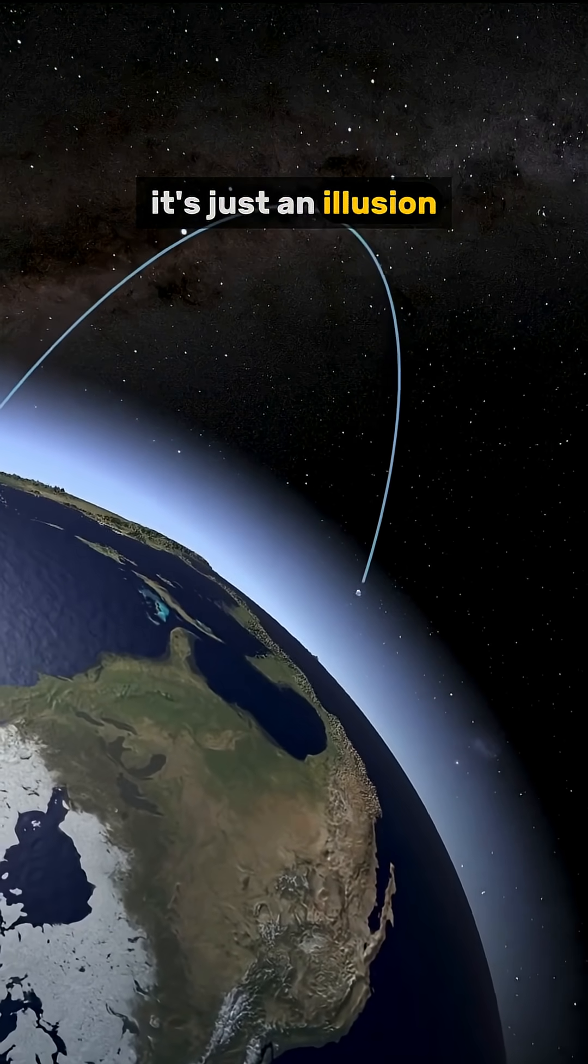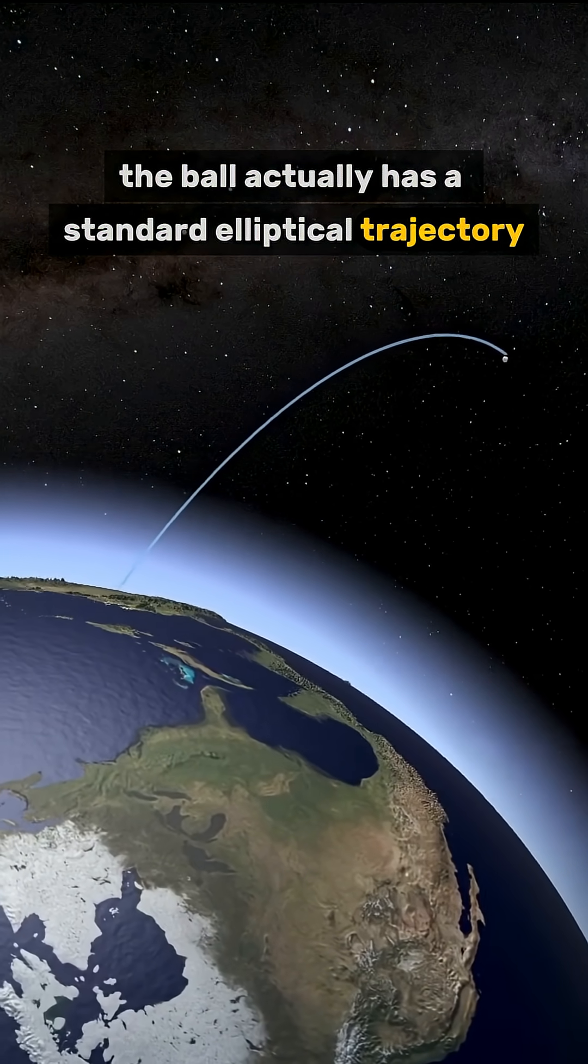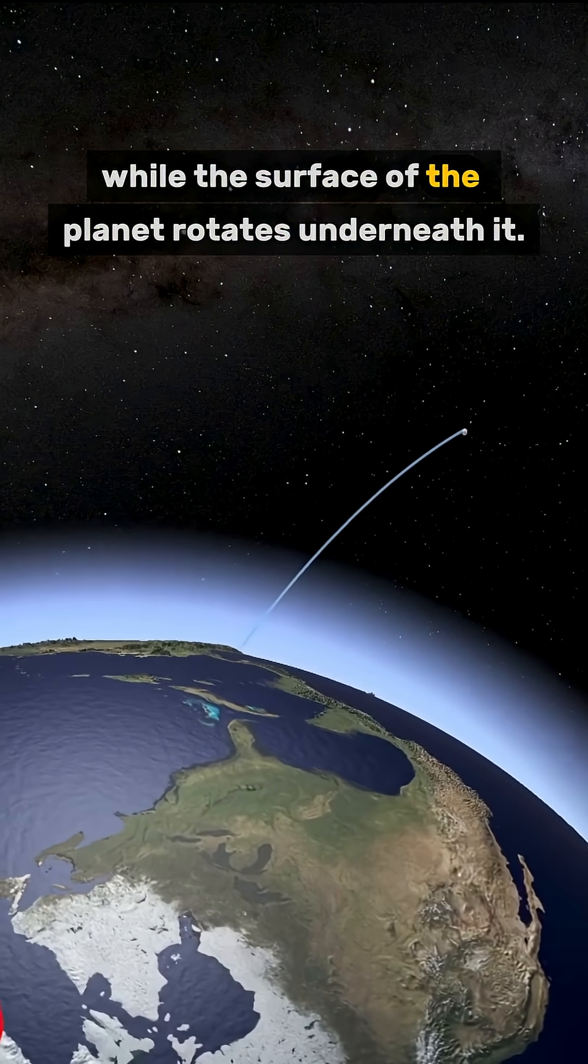The ball actually has a standard elliptical trajectory while the surface of the planet rotates underneath it.